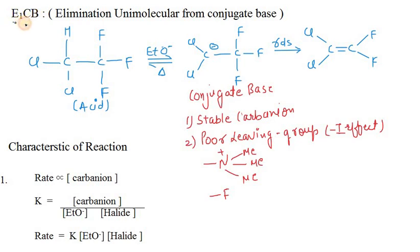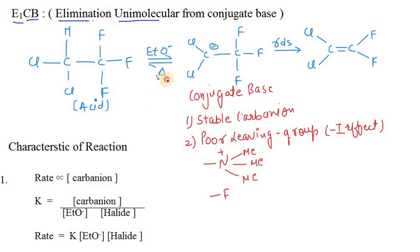Let's talk about E1CB, where E represents elimination, 1 is unimolecular, and CB stands for conjugate base. It is an elimination reaction, so we use high temperature. Now, if we know that this substrate is an acid, we can proceed with the mechanism.